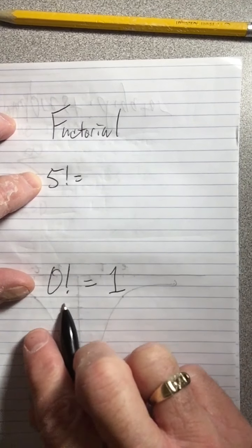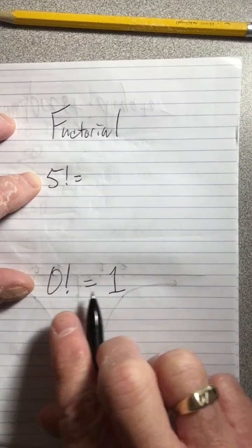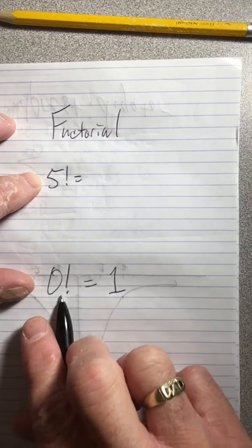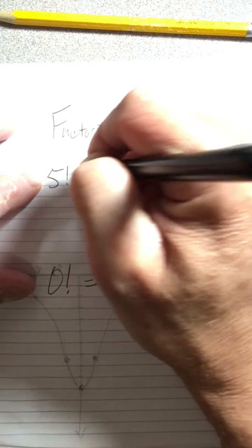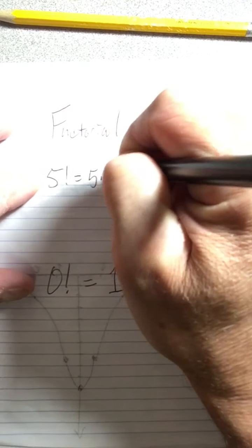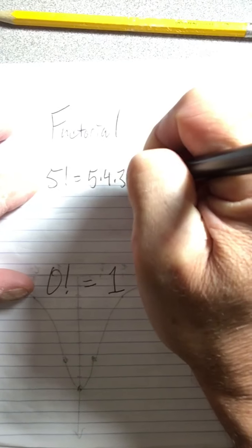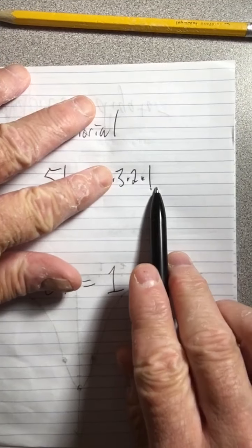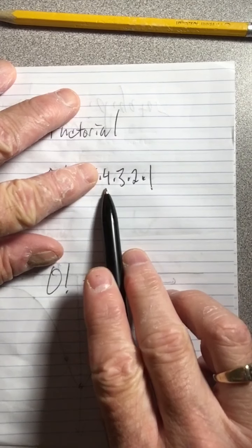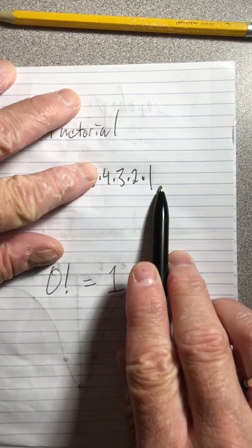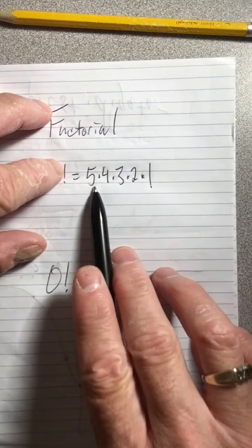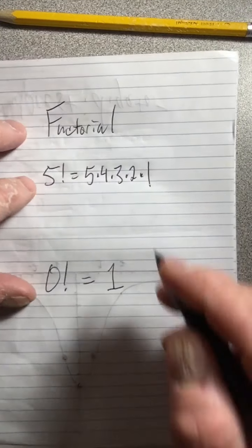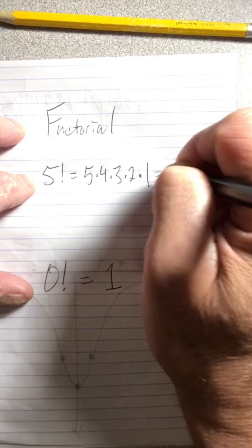So we go 5 times 4 times 3 times 2 times 1. There's 3 factorial which is 6, then 4 factorial which is 4 times 6 which is 24, and 5 factorial is 5 times 4 factorial, so that would be 120. When you multiply this out you get 120.